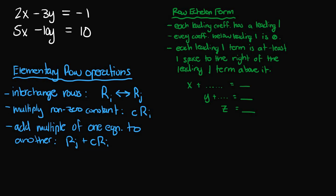In this video, I want to do a very simple example about solving a system of linear equations using Gaussian elimination and a graphical approach to finding the solution set. In this example, we're going to convert this system of linear equations into row echelon form so that we can use back substitution to solve for the unknown variables x and y.